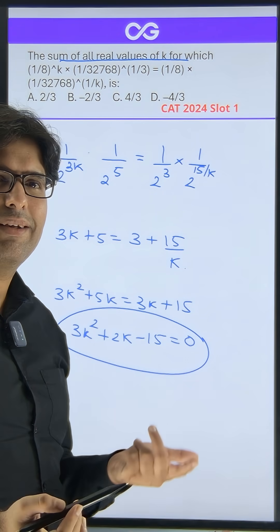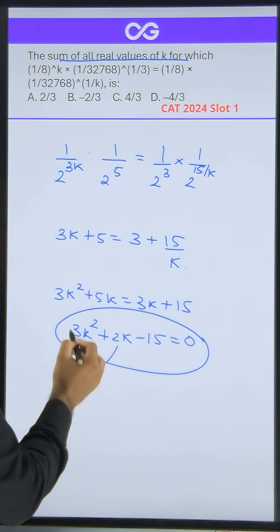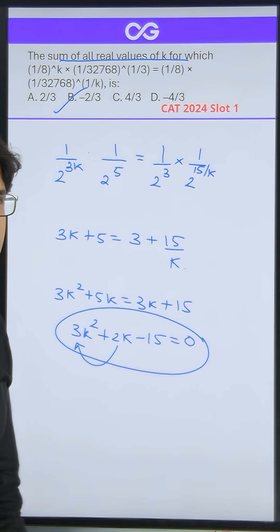They are asking sum of all real values of k, so there are two roots of k. Effectively, sum of roots happens to be minus b by a, which means minus 2 by 3. Choice B becomes your answer.